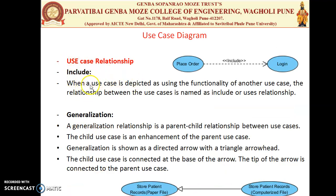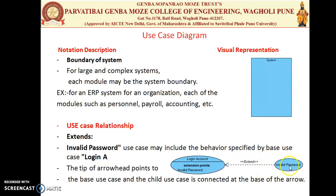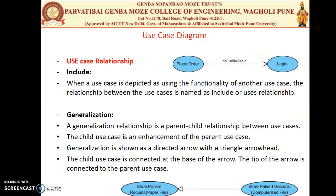The second relationship is Include. Include is when a Use Case uses the functionality of another Use Case; the relationship between those use cases is named Include. For example, Placing Order includes the functionality of Login. In Extend we are extending the behavior externally, and it uses a stereotype notation shown by double angle brackets. Include means the parent use case takes functionality from the child use case; it is shown by a dotted arrow pointing to the child use case from which we are including the behavior.